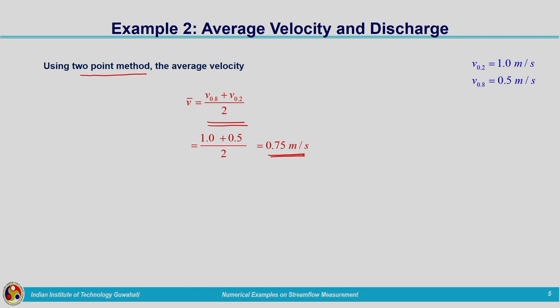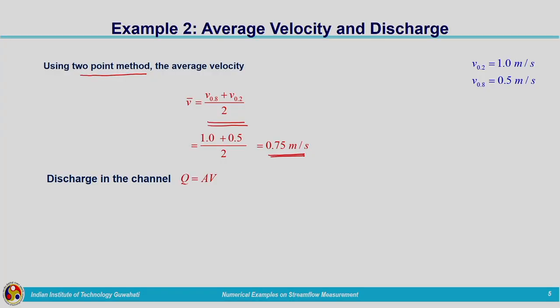Once average velocity is calculated, we compute discharge by substituting into the continuity equation. Discharge Q = AV. The channel has a rectangular cross section, so area = 5 × 2 = 10 m². Average velocity is 0.75 m/s. Multiplying gives a discharge of 7.5 cubic meters per second. This is direct substitution — you need to calculate the average velocity and substitute into the continuity equation to get the stream flow or discharge.